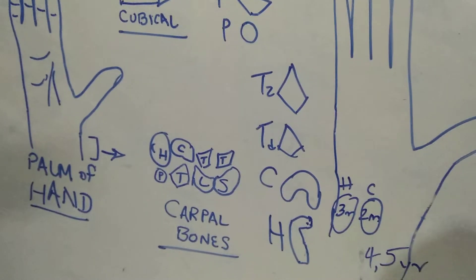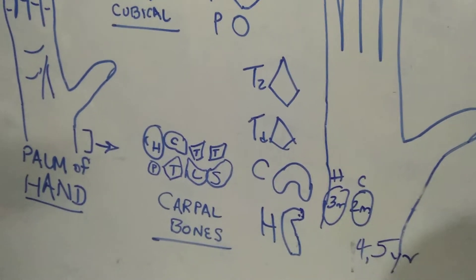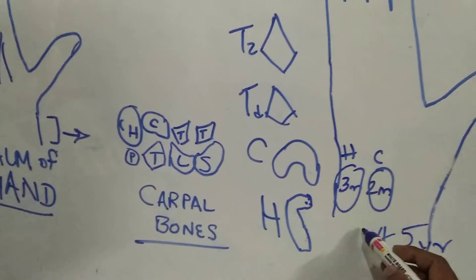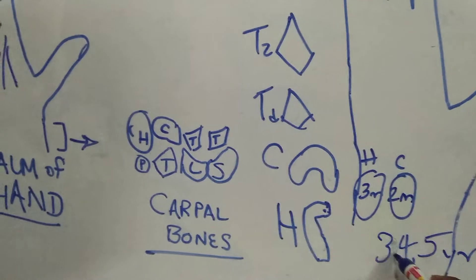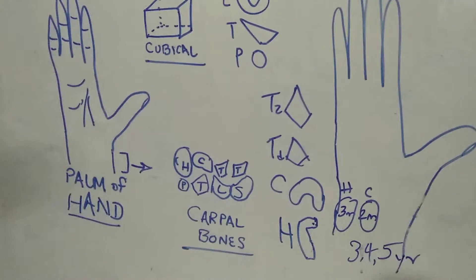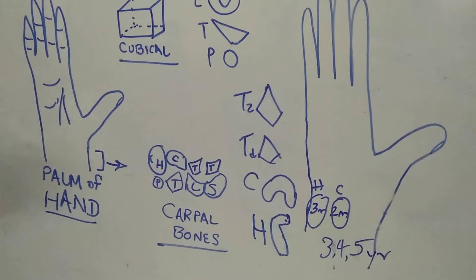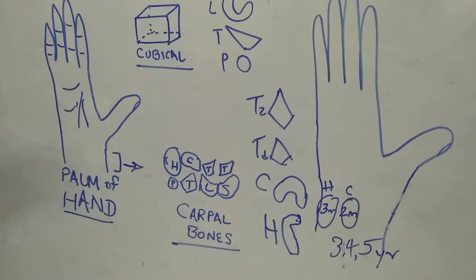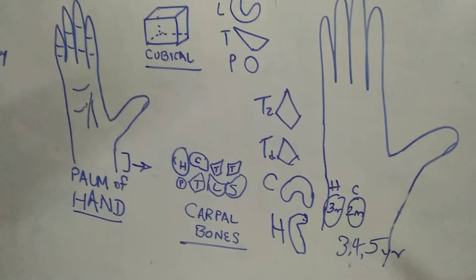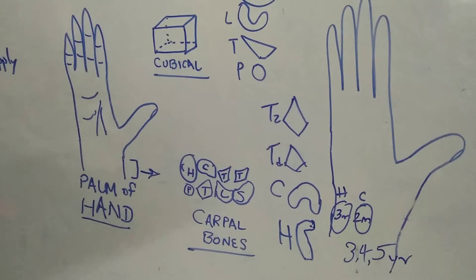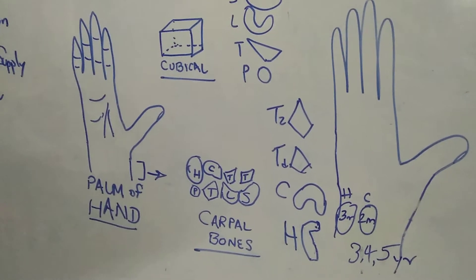For triquetral — 'tri' means three — so triquetral ossifies at 3 years. Very simple. So scaphoid is 5 years, lunate is 4 years, and triquetral is 3 years.